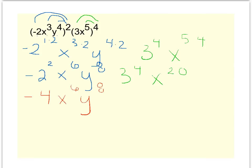3 to the 4th. Let's clean that up a little bit. That 3 to the 4th is 81, and x to the 20th.